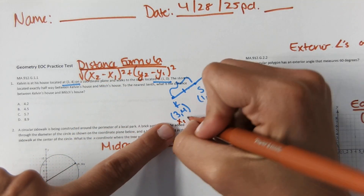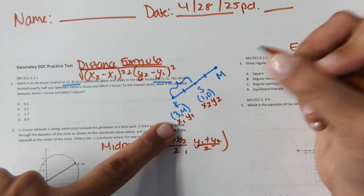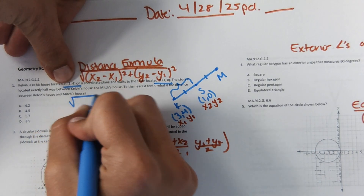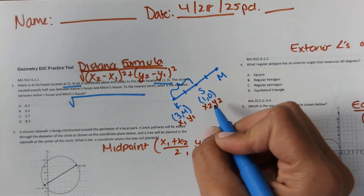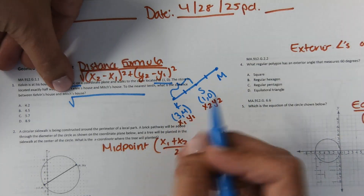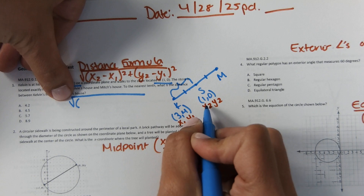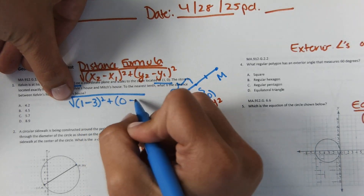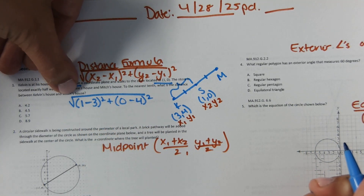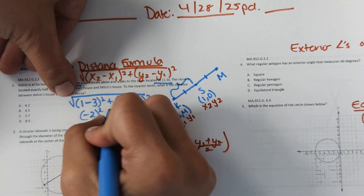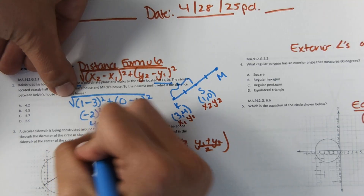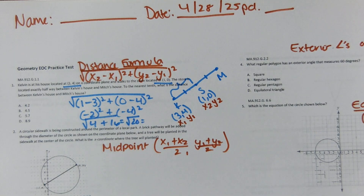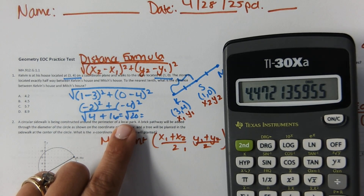I'll label the points: (3, 4) as x₁, y₁ and (1, 0) as x₂, y₂. It doesn't matter which set you label first — distance is the same either way, there's no such thing as negative distance. Plugging in: x₂ minus x₁ is (1 − 3)² plus y₂ minus y₁ is (0 − 4)², giving us (−2)² + (−4)², which is the square root of 20, equaling 4.47.